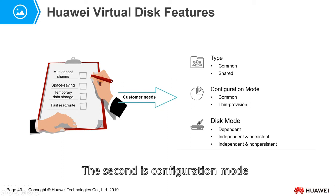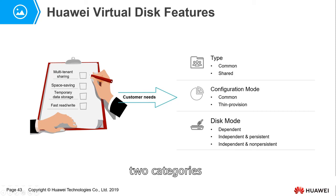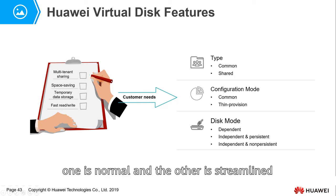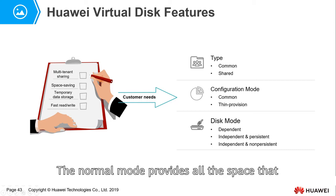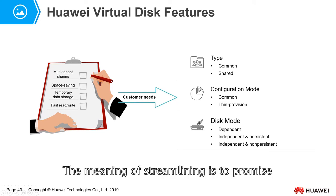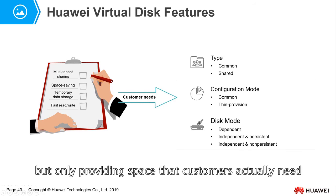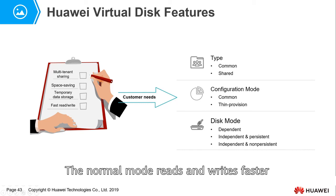The second is configuration mode, also divided into two categories: normal and thin provisioning. Normal mode provides all the space the customer requests upfront. Thin provisioning promises a certain volume of space but only provides the space the customer actually uses. Normal mode reads and writes faster, while thin provisioning saves space.